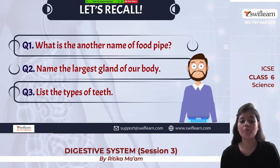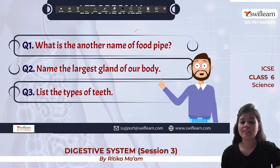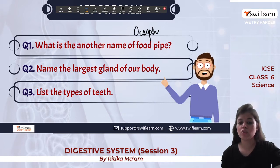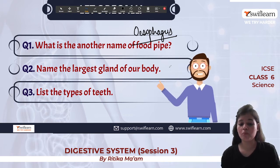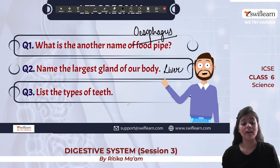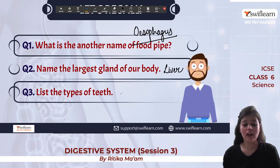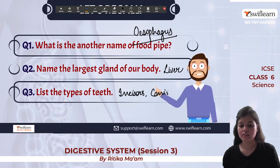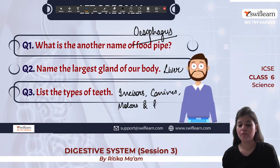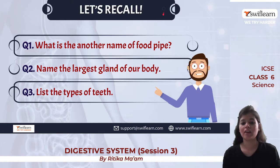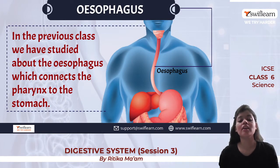Let us recall what we have studied so far. The food pipe is also known as the esophagus. The largest gland in our body is the liver. We have four types of teeth: incisors, canines, molars, and premolars.